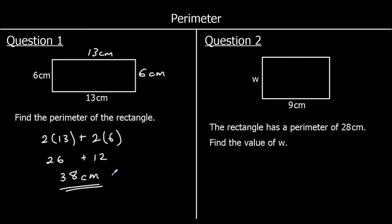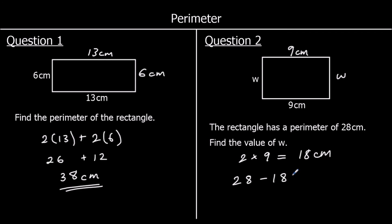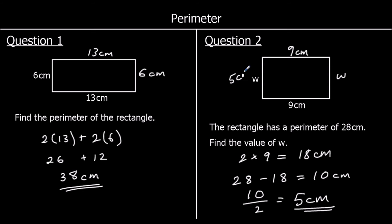Question two: this time we are told the perimeter is 28, and we have a missing length. The bottom and top are the same, and the two sides are the same. We've got two nines — two nines are 18 — so the top and bottom total 18 centimetres. Take that away from 28: 28 take away 18 is 10. We've got 10 centimetres left for two sides, so each side is 5 centimetres, and that makes it add up to 28.